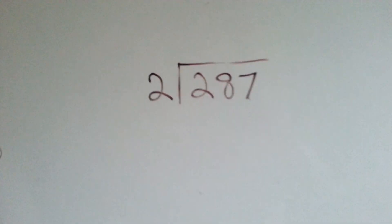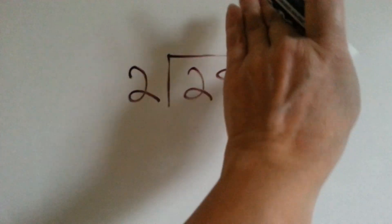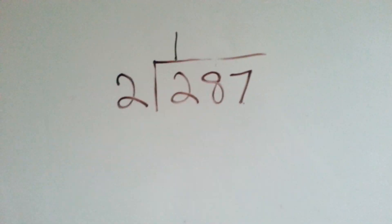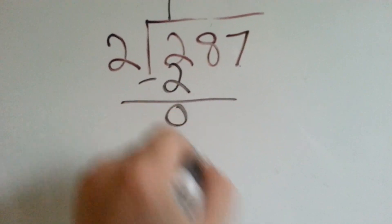So now let's try it with one that has a remainder. Can 2 fit into 2? Yes, it can. One time. And 2 times 1 is 2. We're going to do our subtraction. We get 0.